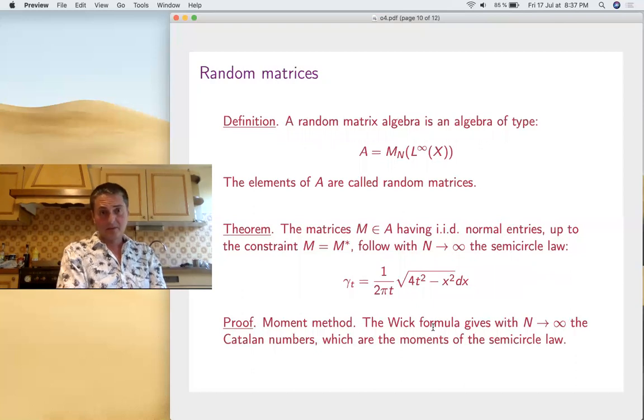Another interesting thing that you can do is random matrices. So let's just take this von Neumann algebra as matrices, say Hermitian ones. So the elements inside are called random matrices. And the main discovery here, due to Wigner in the 50s, was that the Gaussian matrices, which are taken self-adjoint, follow as N is big, this semicircle law. So proof by moment method, Wick formula. You get Catalan. Very interesting results.